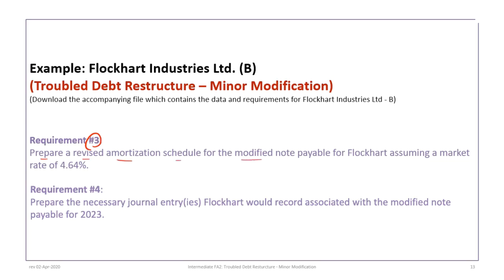We can now proceed with Requirements Three and Four. Requirement Three is to prepare a revised amortization schedule for the modified note payable for Flockhart, assuming a market rate of 4.64% — this was given in the problem but we also showed how it was calculated. Requirement Four is to prepare any necessary journal entries for Flockhart to record the modified note for 2023.